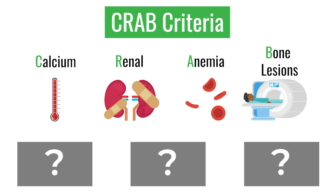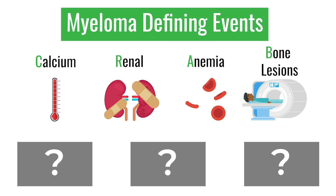Experts then realized there were additional features indicating these patients require treatment. Looking at the data, they came up with three additional features. With seven features now, the old CRAB acronym was no longer sufficient, so these seven features became known as myeloma defining events — in addition to the four CRAB features already described.